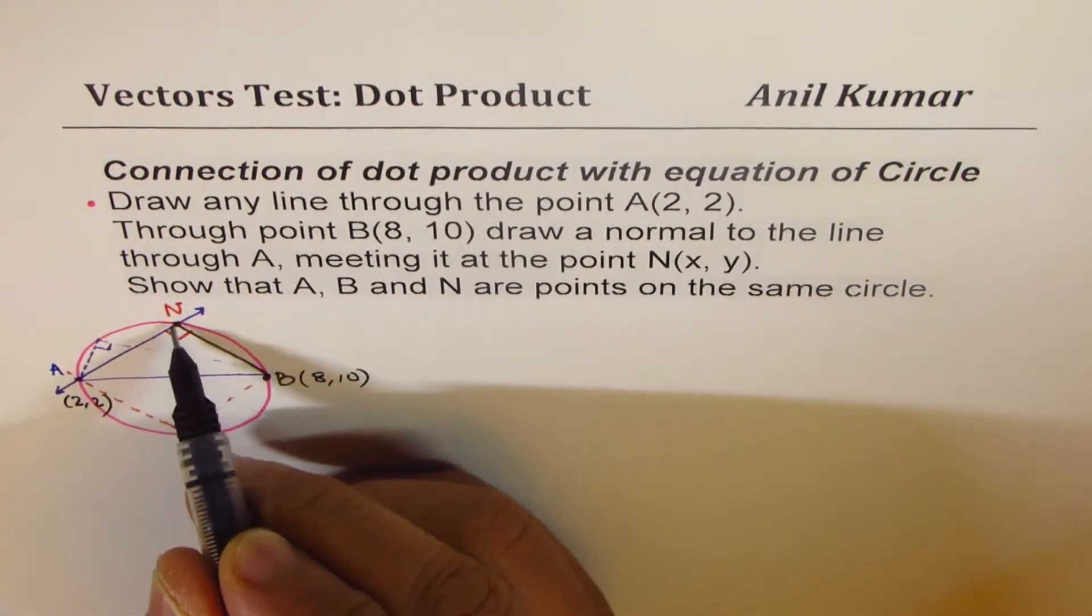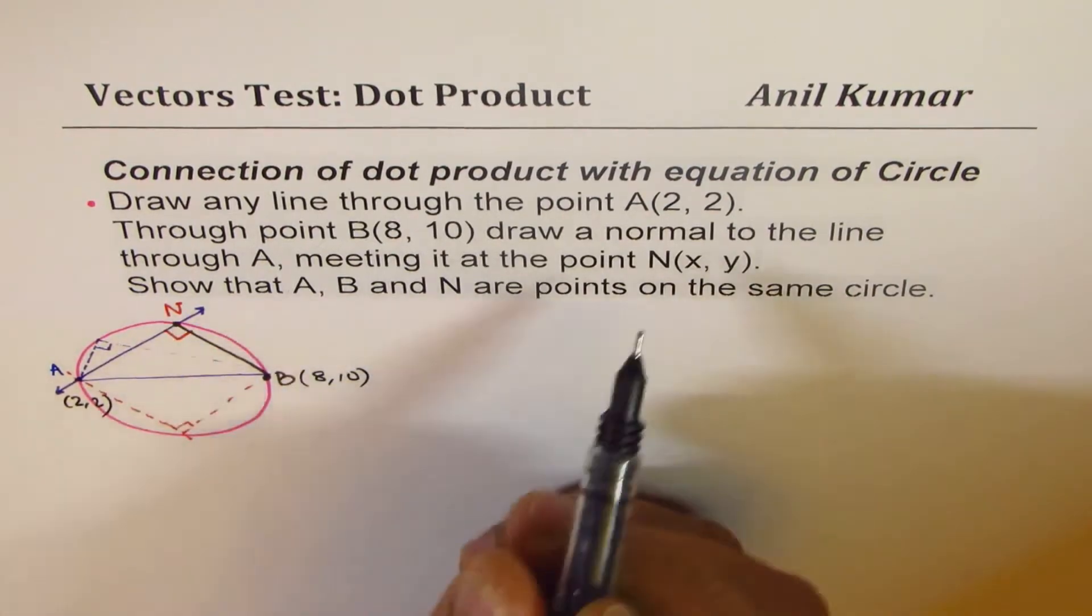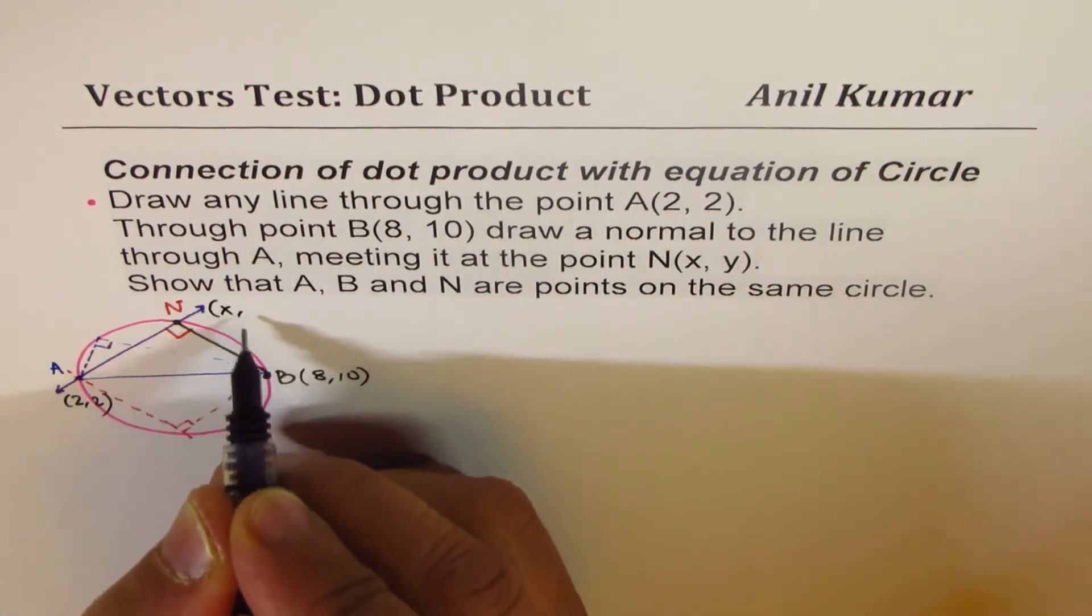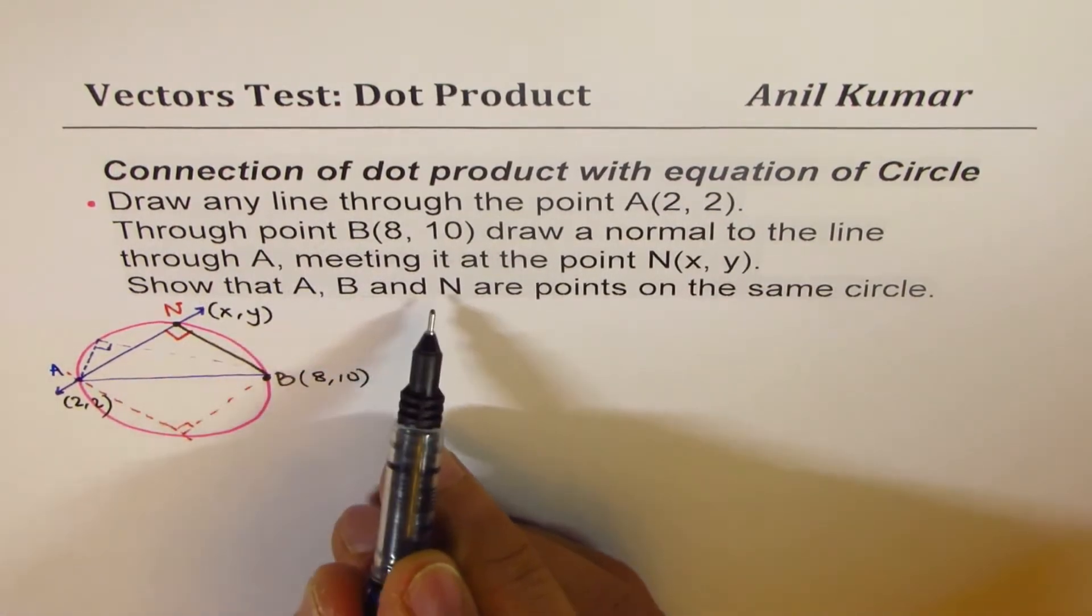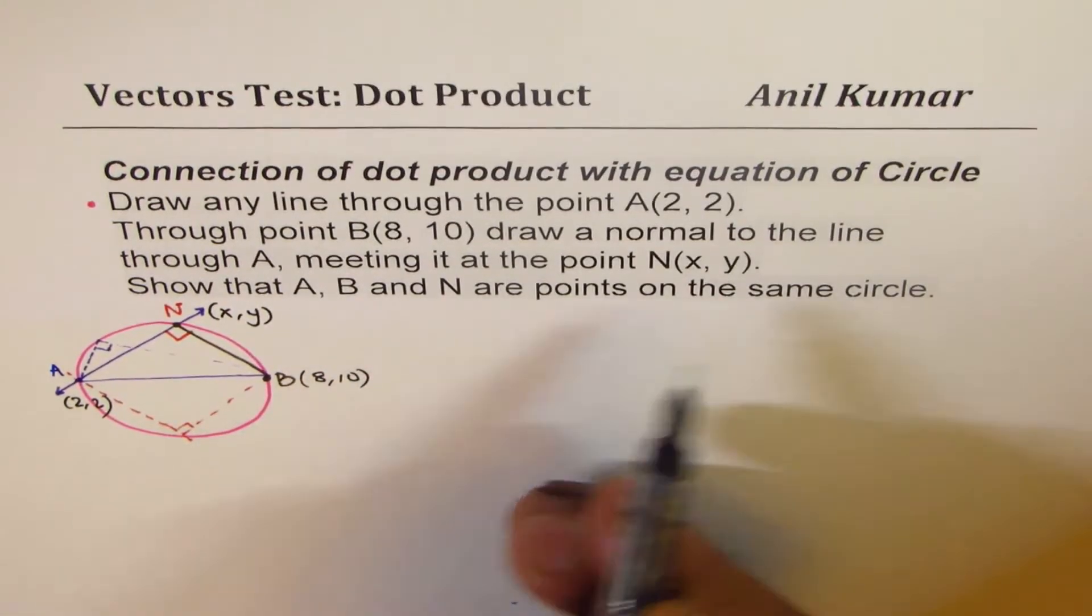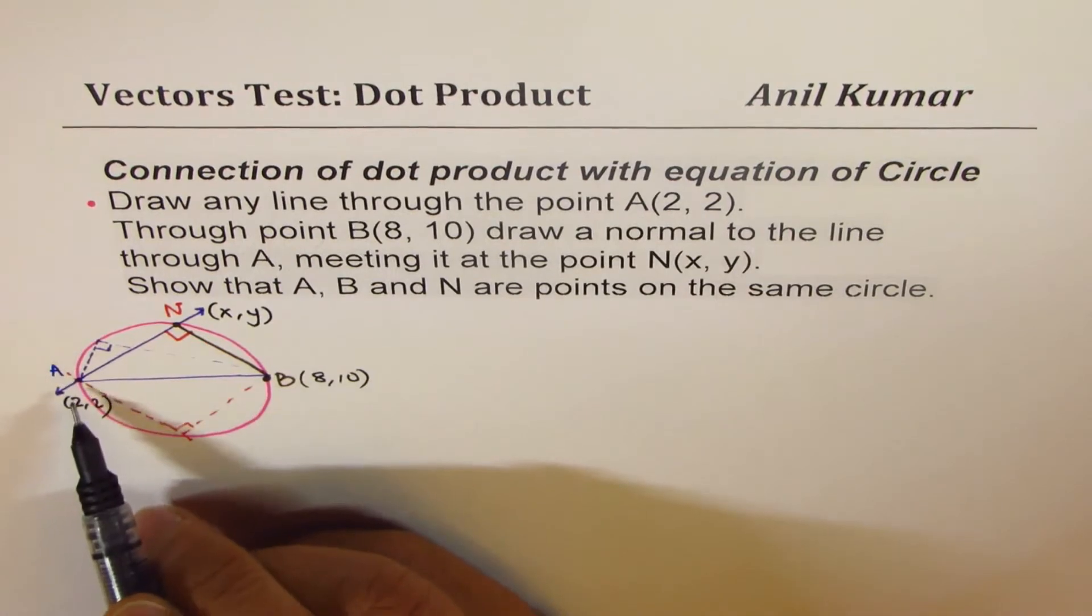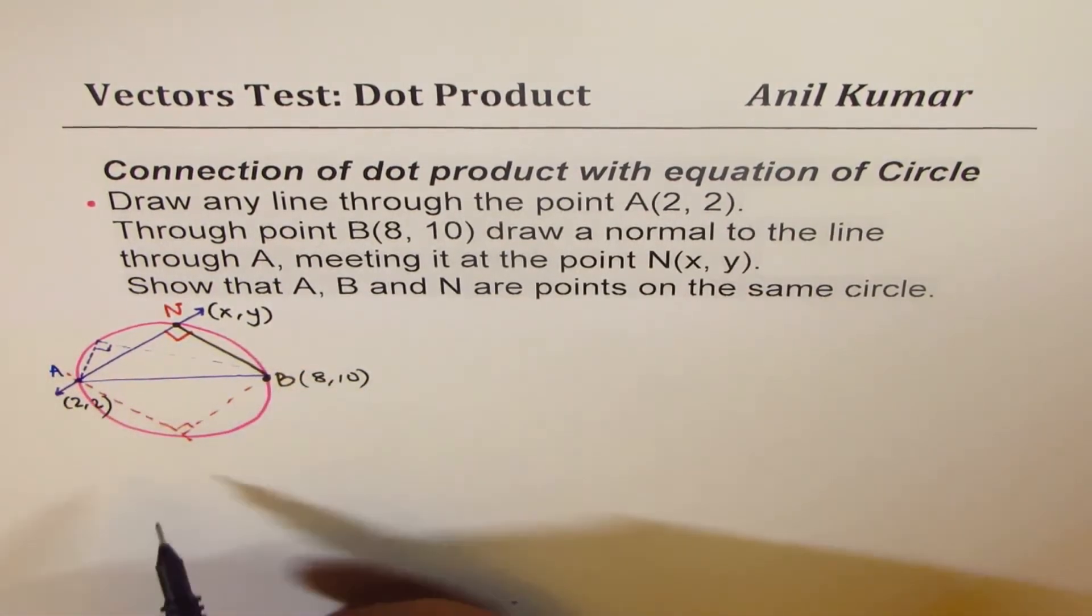Draw a normal to the line. So if I draw a normal to the line, it's going to intersect somewhere. Let that point be N, and the coordinates of N are X, Y, any general point. Show that A, B, and N are points on the same circle. So we have to show that they are on this particular circle.